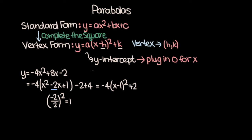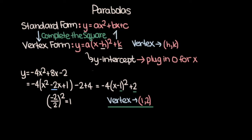Now our equation has been converted to vertex form, and recall that in vertex form the vertex is just h comma k. In this case h is 1 and k is 2, so the vertex of this parabola is the point 1 comma 2. That was an example of converting from standard to vertex form. Converting the other direction from vertex to standard form is a lot simpler — all you need to do is expand the square term out, so I'm not going to do an example of that.